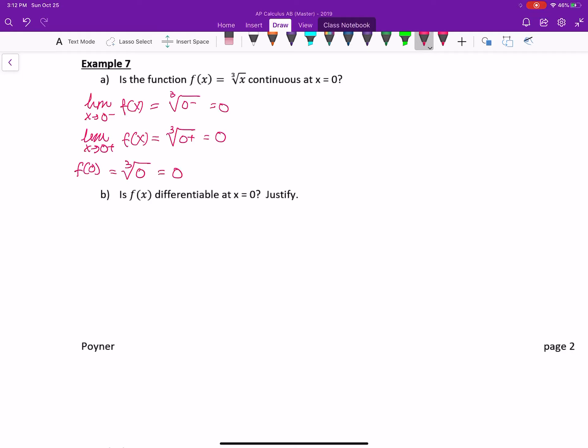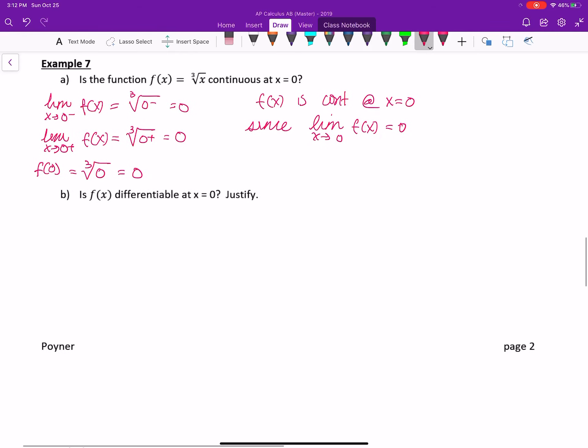So all three are equal. We can conclude f(x) is continuous at x equals 0 since the limit as x approaches 0 of f(x) was equal to 0. So it exists and we have a value, and that value is going to equal f(0). Continuity.